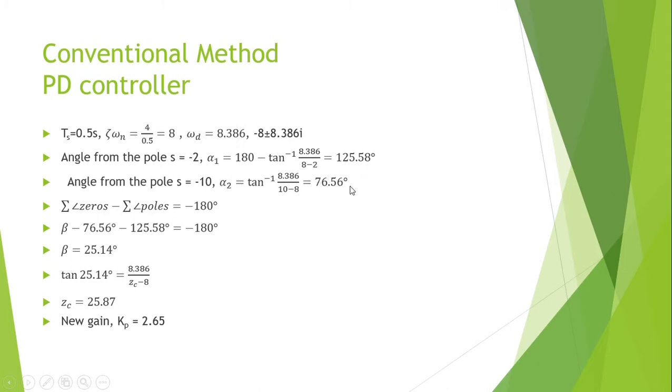Evaluating these two angles in this equation, we get the angles from the zeros, the compensator zeros to the dominant poles, which is 25.14 degrees. And we get the zero value which is negative 25.87.